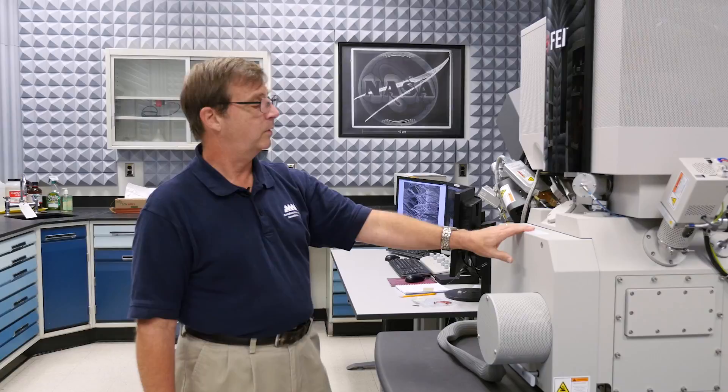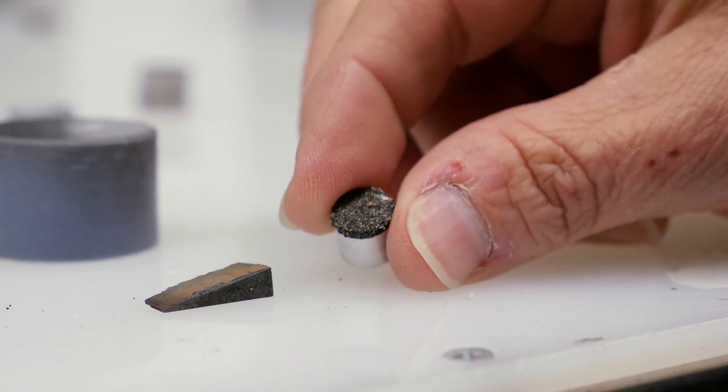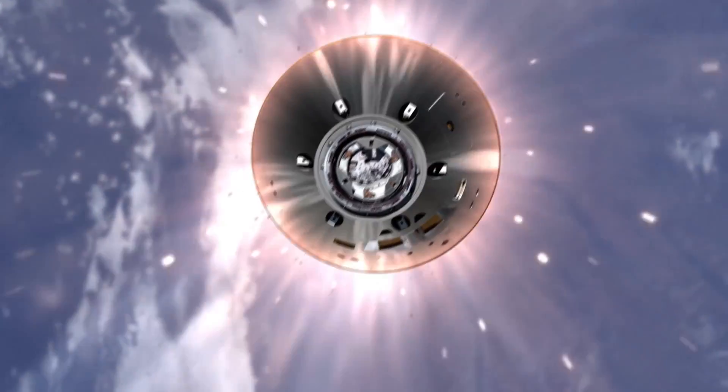Electrons come down, hit the sample, and determine why it fractured, how it fractured. It could be metal, plastic, ceramic - working on the shuttle, working on the Orion.